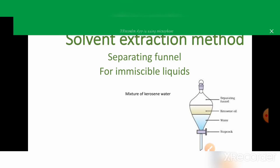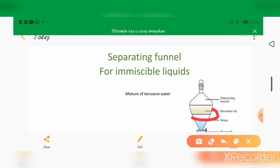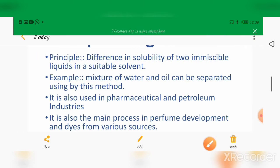The mixture is taken in a separating funnel. There is a layer in between these two liquids. When you open the stopcock, the denser particle comes out first and the lighter particles remain upwards, so they can be separated easily.